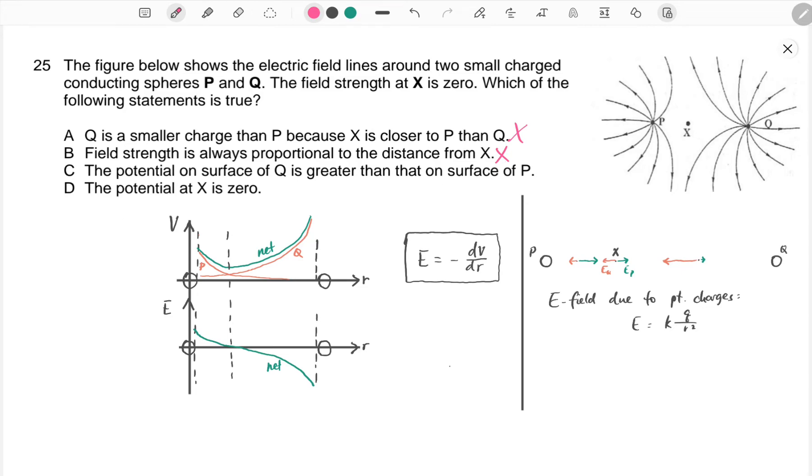D - D is incorrect as well. We can see from this graph that at this point, which is the turning point of V against R, the value of potential is not zero, it's actually a positive number.